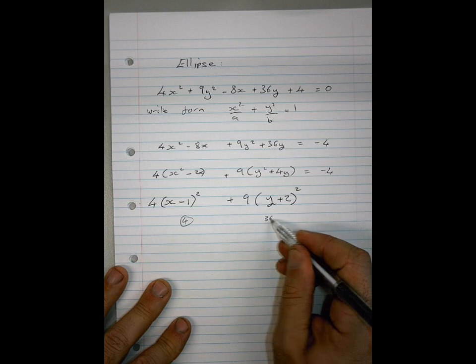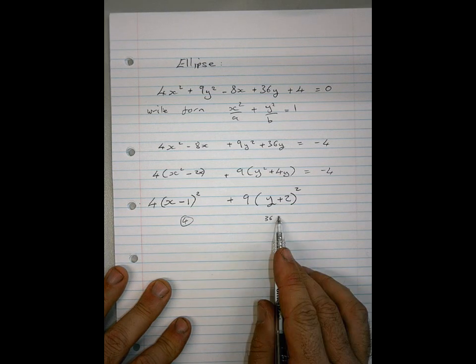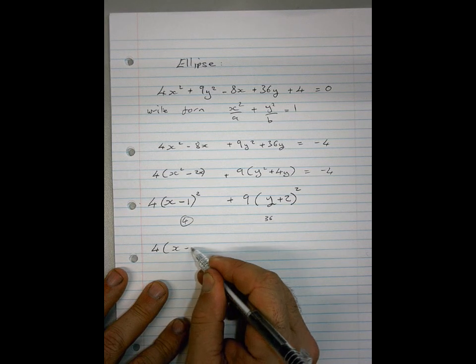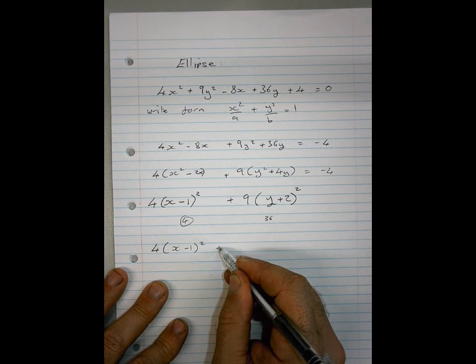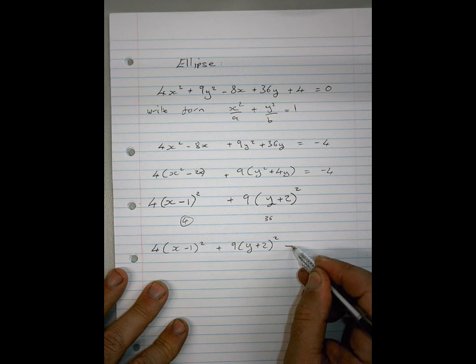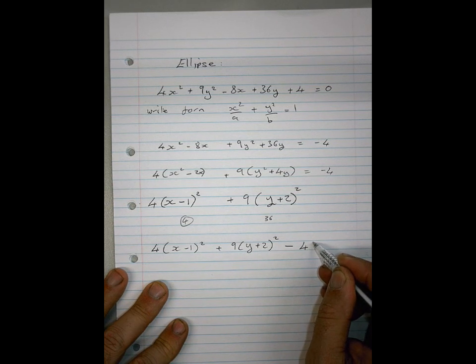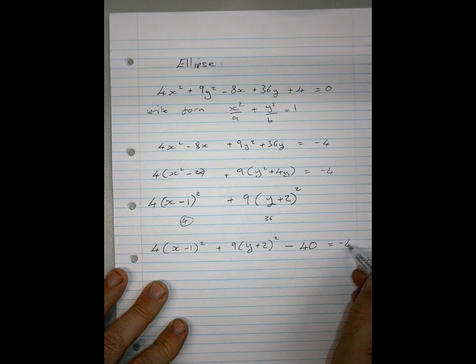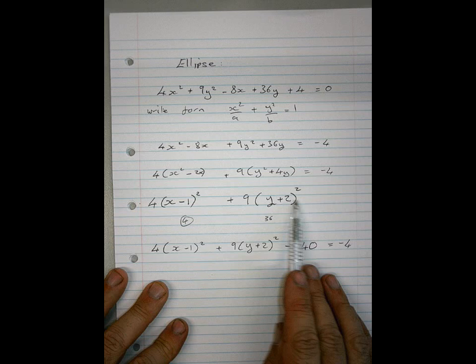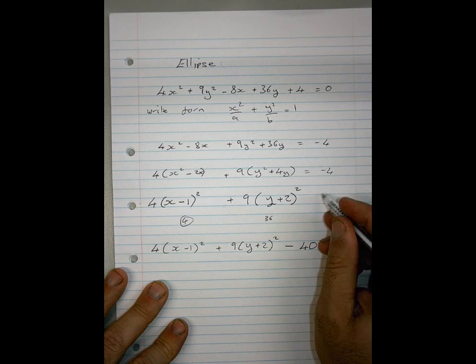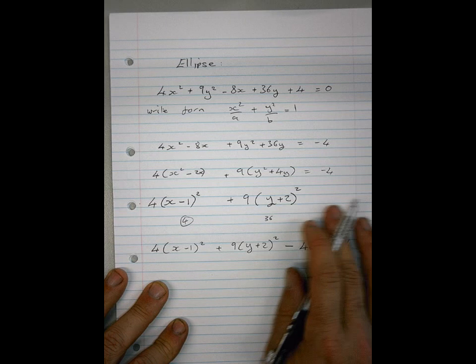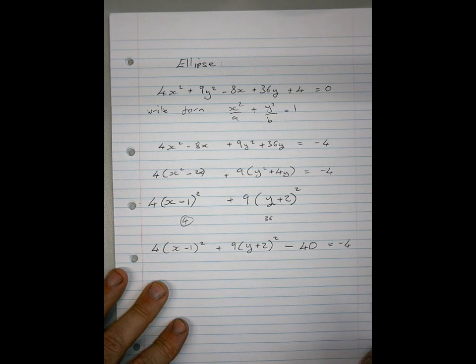So we've got an extra 36 there. So therefore, we now know that 4(x - 1)² + 9(y + 2)² - 40 equals negative 4. Okay. Because this one gives us 4, this one gives us 36. So in order to get to negative 4, that's why there's no equals here. Yeah. I've got to take away 40 to get back to where I started from.